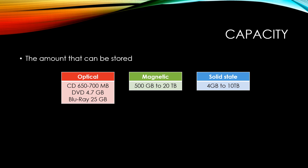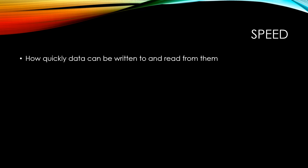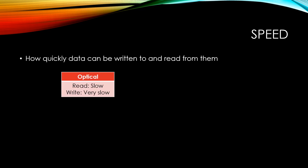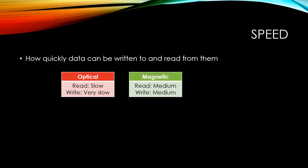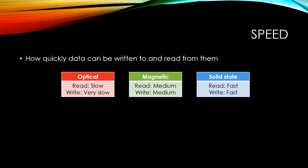It should be noted that generally solid state drives in computers are much smaller than that, often less than 1 terabyte, and more often than not just used to store the operating system for fast boot times while a magnetic hard disk stores the majority of the software. Speed refers to how quickly data can be written to and read from a particular storage medium. Optical storage has slow read times and very slow write times. Magnetic storage has medium times for both read and write, while solid state storage has fast read times and fast write times.